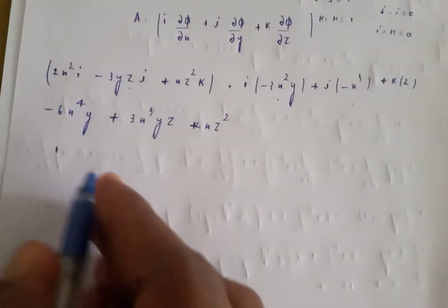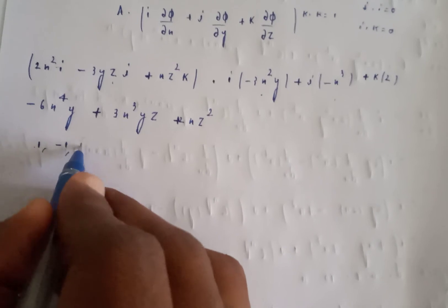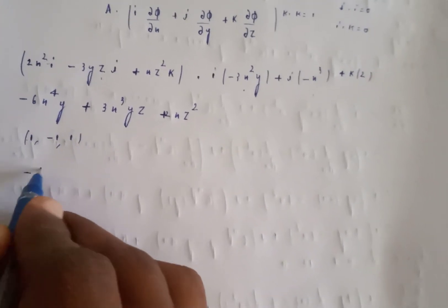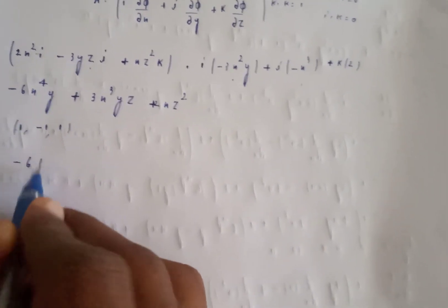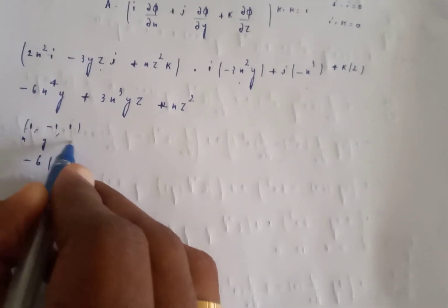Now substituting the point (1, minus 1, minus 1): x equals 1, y equals minus 1, z equals minus 1. So: minus 6(1)(minus 1)(1) gives minus 6 times minus 1. Plus 3(1)(minus 1)(minus 1). Plus 2(1)(1). We compute each term.